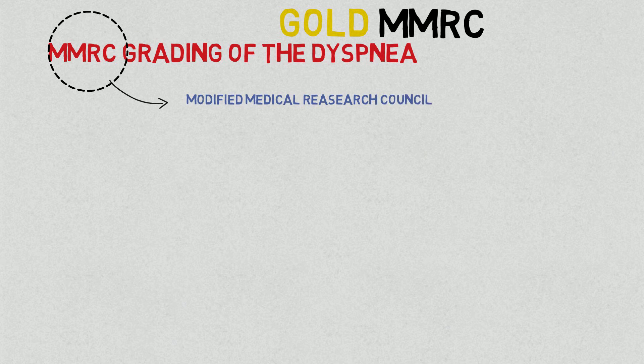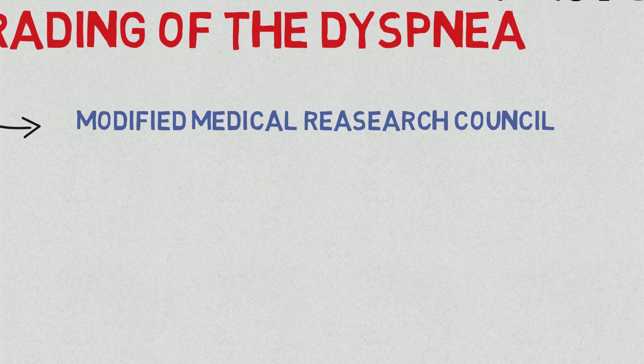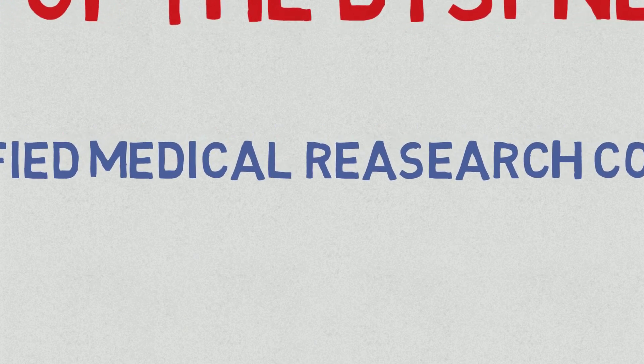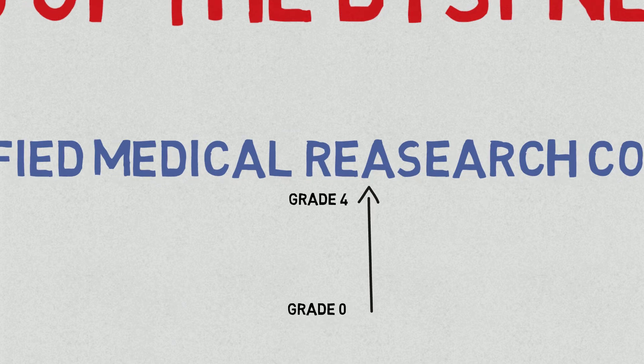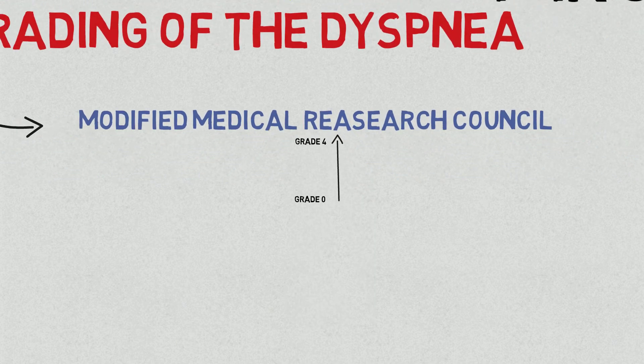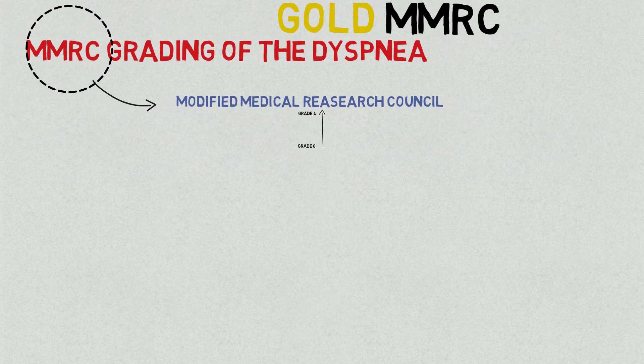There are altogether 5 grades in this system, and it ranges from grade 0, being least severe, to grade 4, which is most severe. So let's talk about the grading.